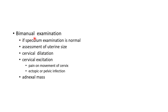Bimanual examination should be done if speculum examination is normal. In bimanual examination, we do assessment of uterine size, we look for cervical dilatation, and we try to elicit cervical excitation — which is pain on movement of cervix and it occurs in ectopic pregnancy or pelvic infection. Adnexal mass can also be examined during bimanual examination.